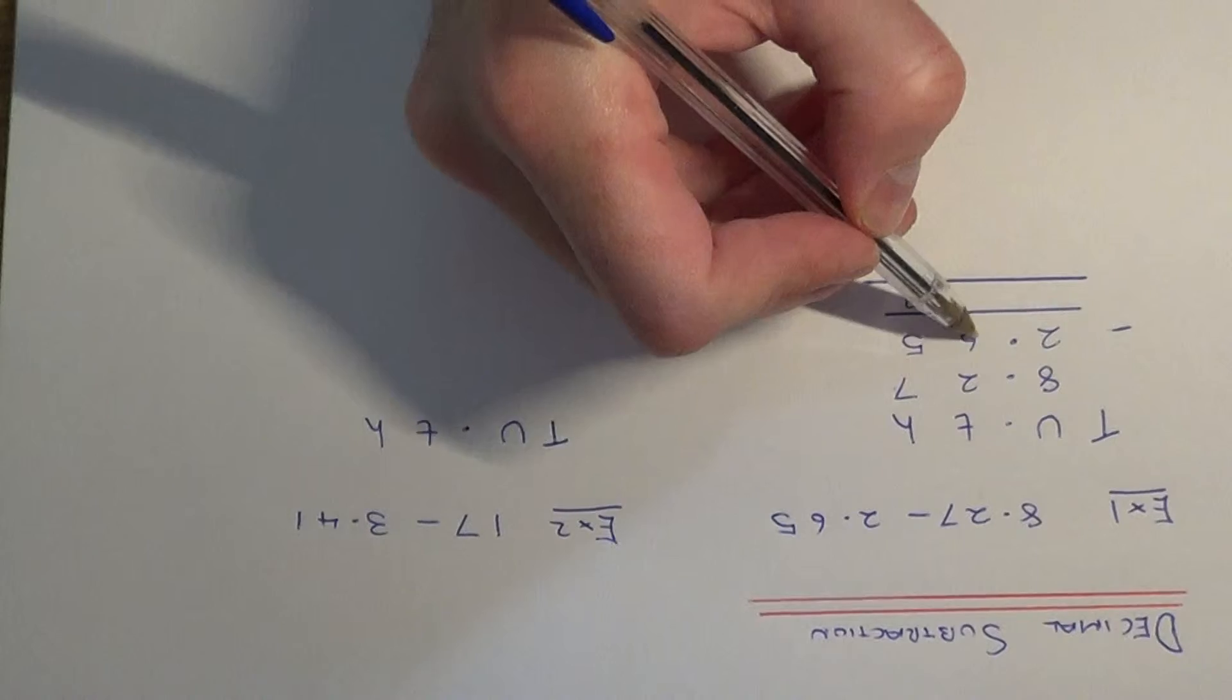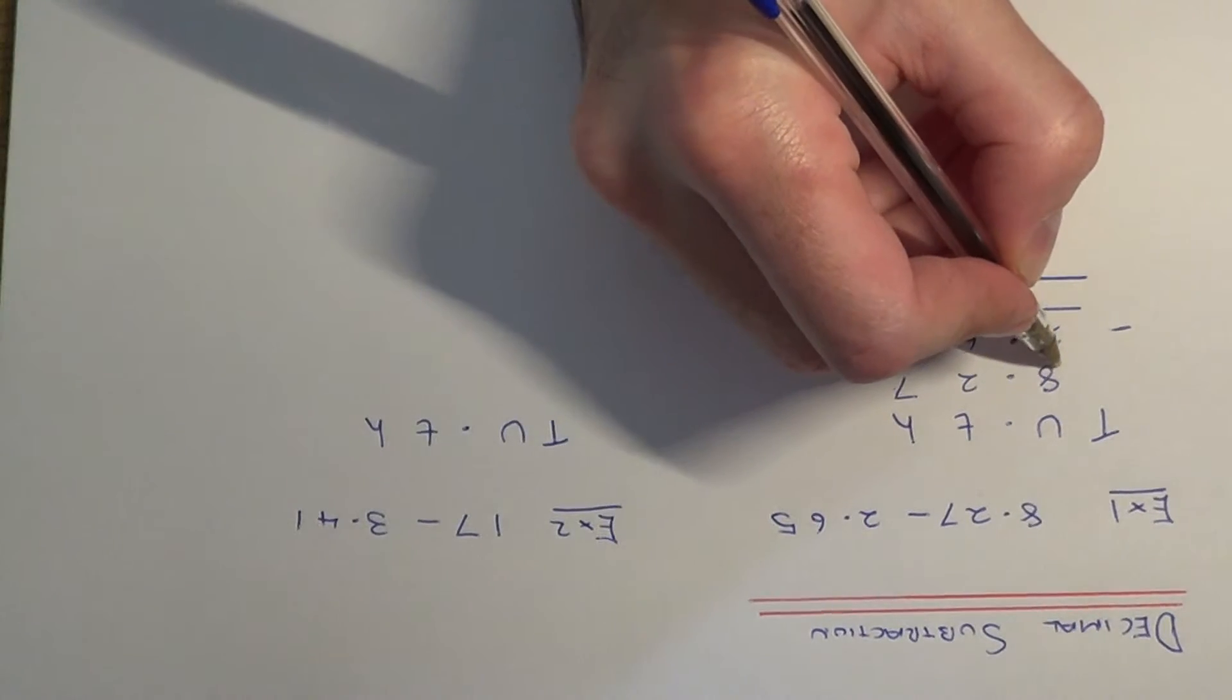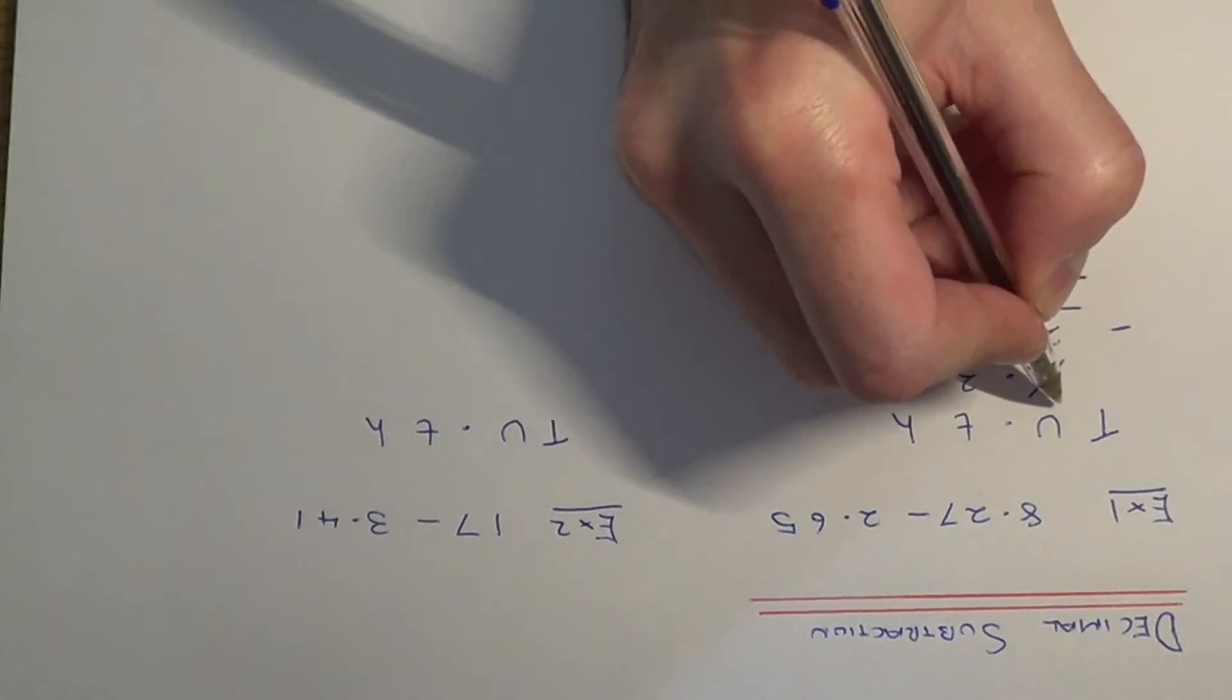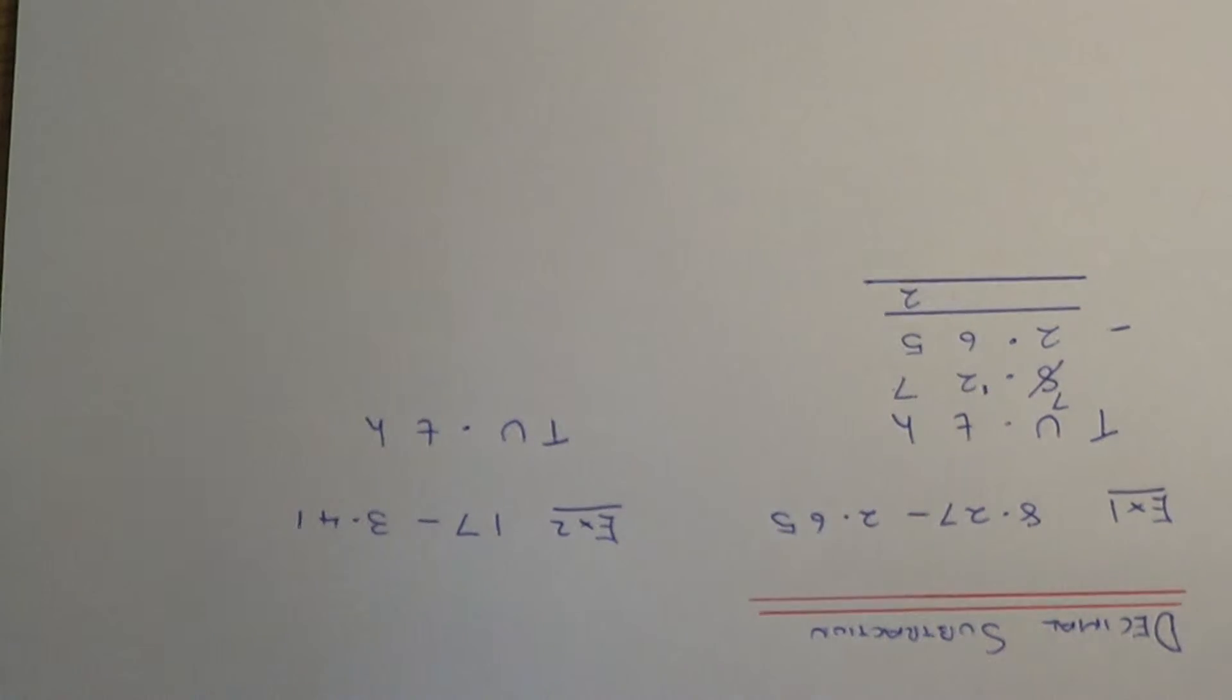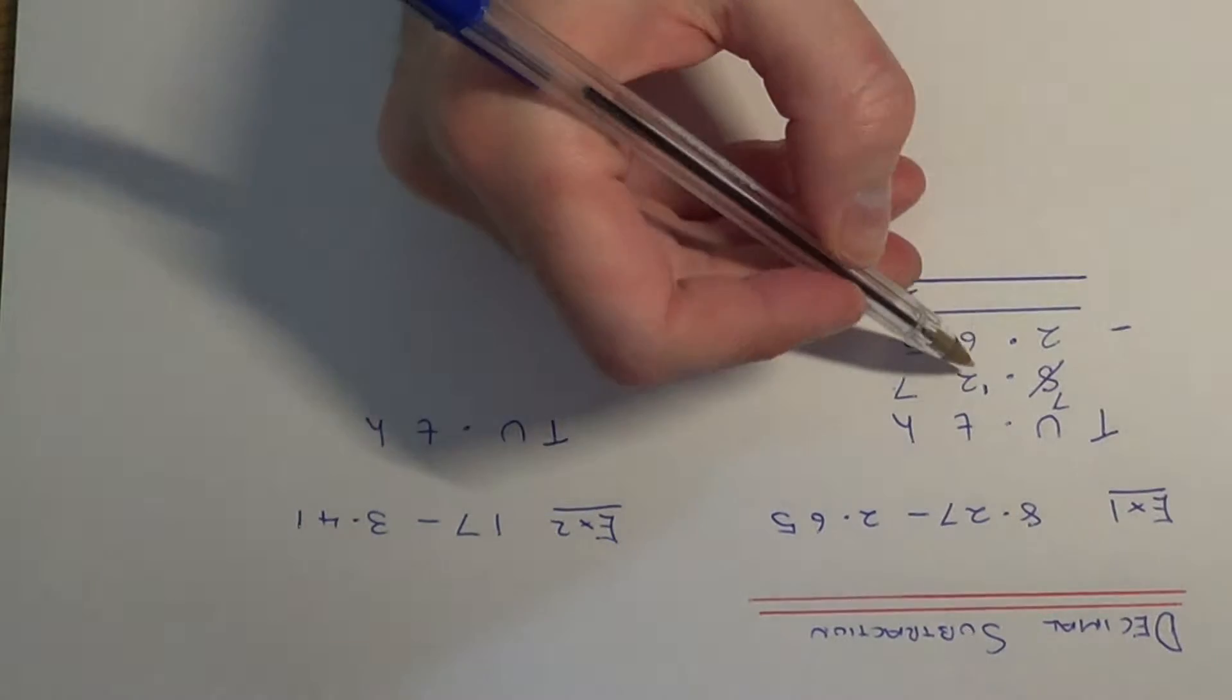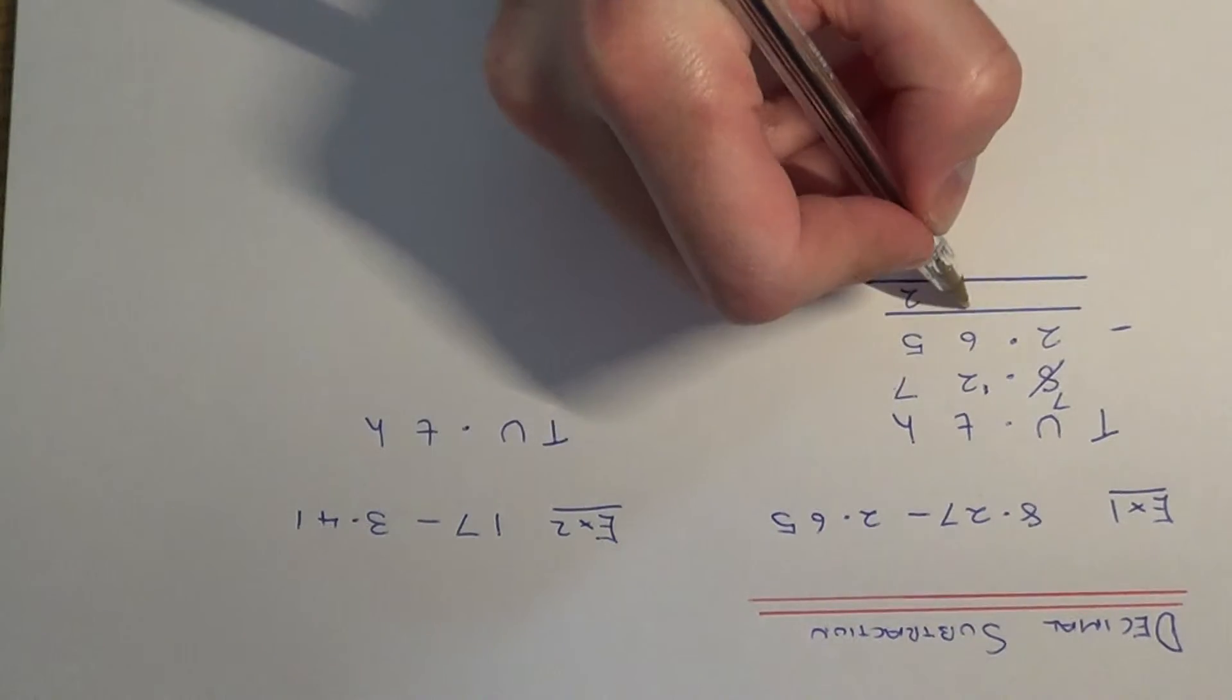2 take away 6, well we can't work that one out, so we need to borrow 1 from the 8, so I'll make that a 7, and put the 1 there to make it 12. So now we can work out 12 take away 6, which is 6.